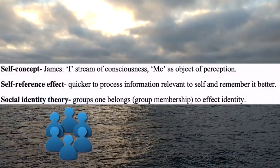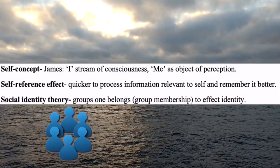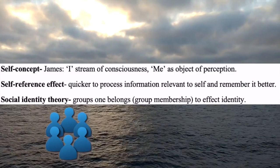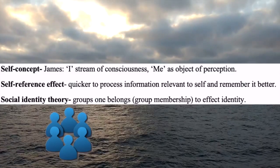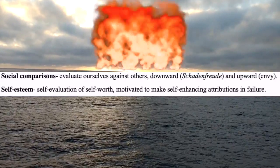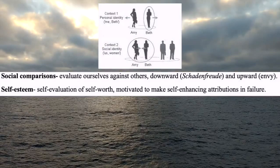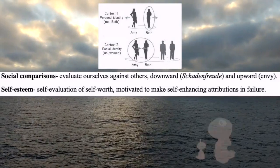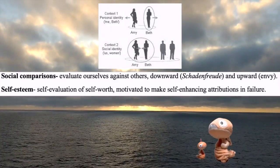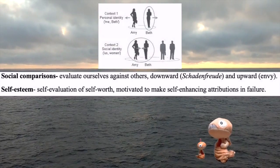Social identity theory states that groups that individuals belong to can influence and affect their identity. Individuals also make social comparisons, whereby they evaluate themselves against others or individuals from other groups — such as comparing downwardly, like Schadenfreude, and upwardly, like envy.